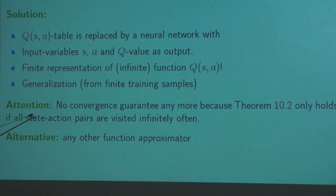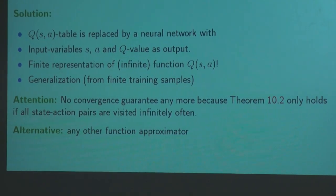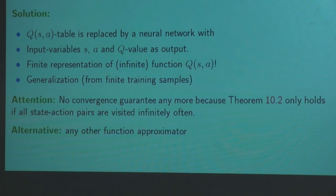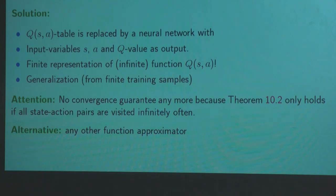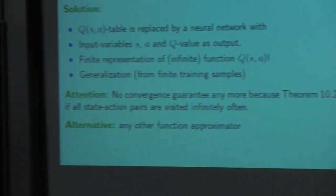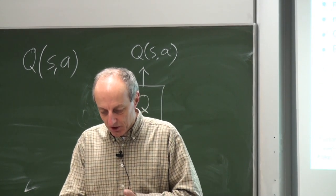The downside is we have no more convergence guarantee, because we are no longer able to visit all state-action pairs infinitely often. It doesn't need to be a neural network — any function approximation technique can be used. We will see in the math lecture the least squares method, which is very powerful and related to neural networks but in many cases much easier to solve.